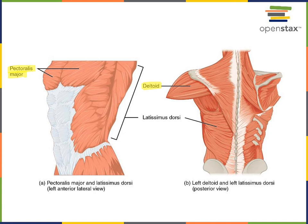Latissimus dorsi is another muscle that adducts the glenohumeral joint. So latissimus dorsi and pectoralis major are synergists that work together for the action of adduction at the glenohumeral joint, and the deltoid is an antagonist to both pectoralis major and latissimus dorsi when it performs abduction of the glenohumeral joint.